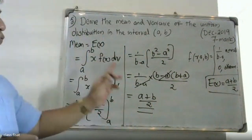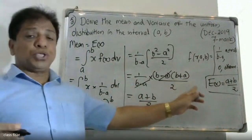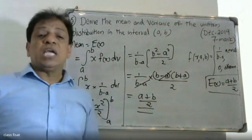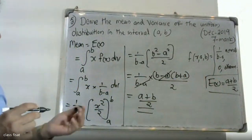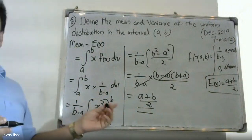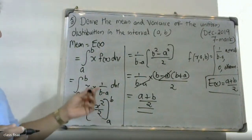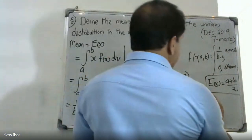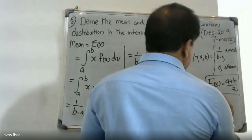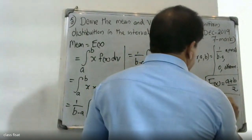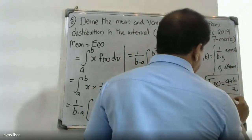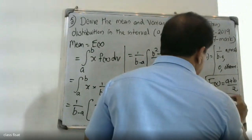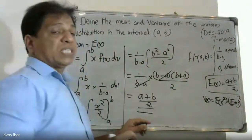Therefore the mean of a uniform distribution is equal to expectation of X, which equals (a plus b) by 2. And for the variance of X, variance equals expectation of X squared minus expectation of X whole squared.